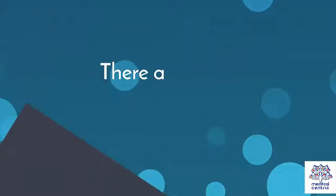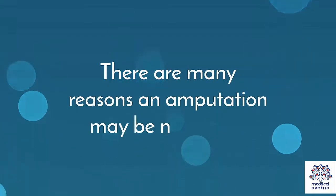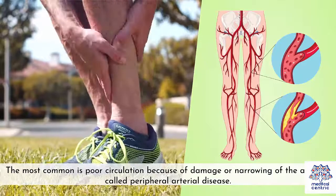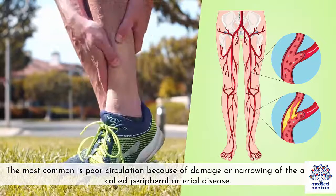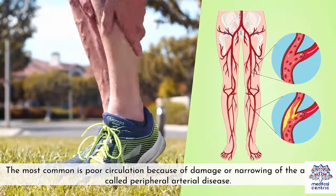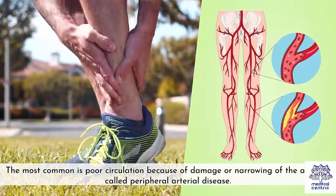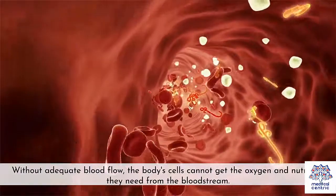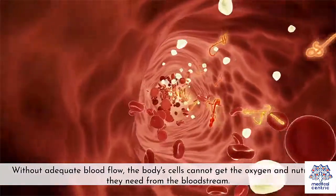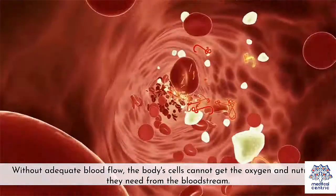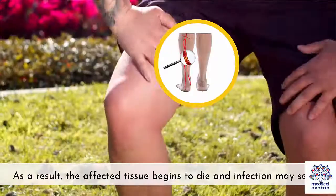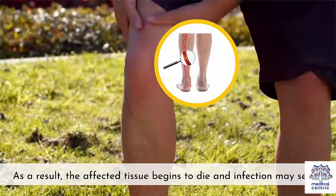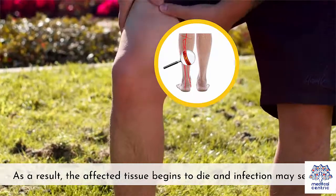There are many reasons an amputation may be necessary. The most common is poor circulation because of damage or narrowing of the arteries, called peripheral arterial disease. Without adequate blood flow, the body's cells cannot get the oxygen and nutrients they need from the bloodstream. As a result, the affected tissue begins to die and infection may set in.